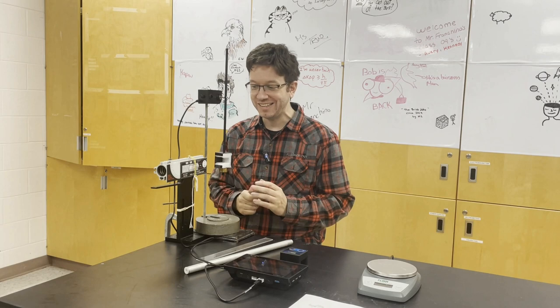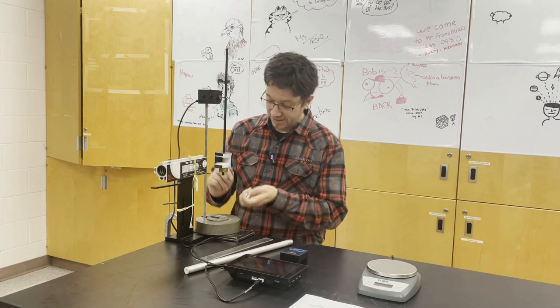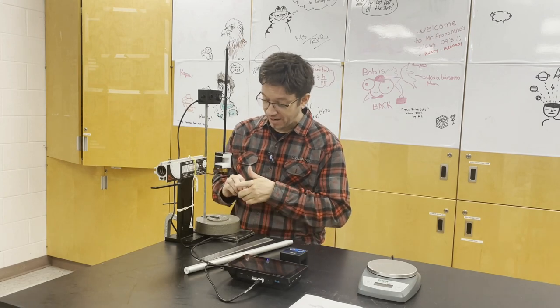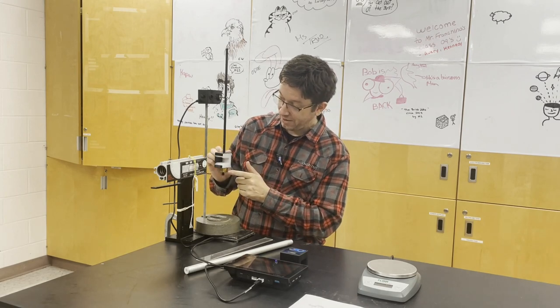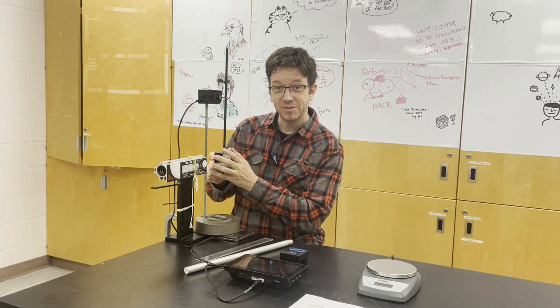All right, to start we're going to need to know a couple of things. We're going to need to know the mass of the pendulum and the mass of the ball. Now the mass of the pendulum, I've got some mass attached to it. We're going to ignore the mass of the rod, but the mass down here is about 100 grams.